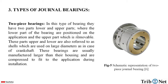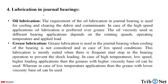The lower part of the bearings is positioned on the application and the upper part is removable. These upper and lower parts are also referred to as shells, which are used on large diameter shafts, as in the case of the crankshaft. These bearings are usually manufactured larger than their housing and are compressed to fit the application during installation. Here we can see the schematic representation of the two-piece journal bearing.